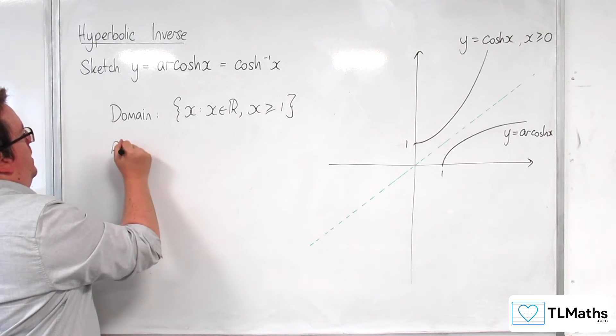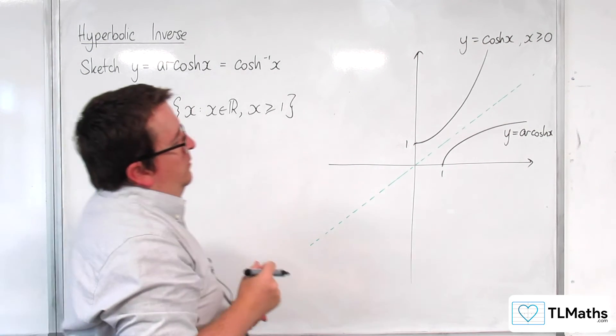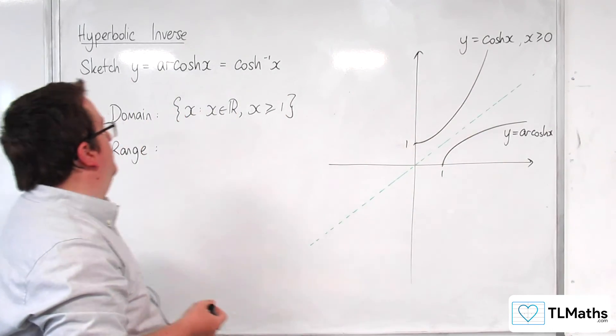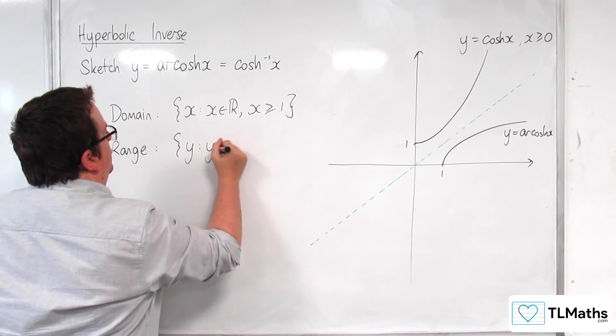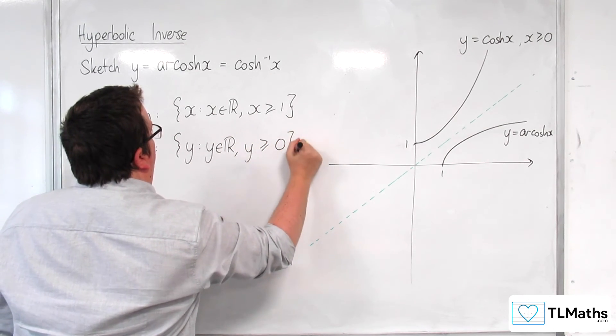And the range allows for any real value as long as it's greater than or equal to 0. So y is such that y belongs to the real numbers, y is greater than or equal to 0.